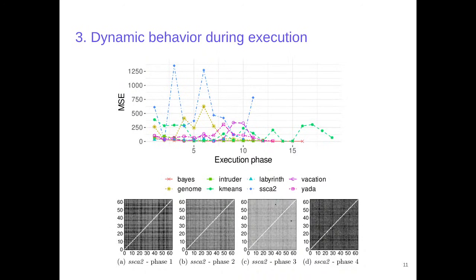The last experiment was to determine if the communication behavior changes during the execution of the application. We collected ten or more matrices during the execution of each application, and calculated the MSE between each matrix and the final collected matrix. Analyzing the graph, we can see again that SSCA2 has the highest MSE difference during the execution. However, as explained in other experiments, it is a difference in the amount of communication, but with the same all-to-all communication pattern.